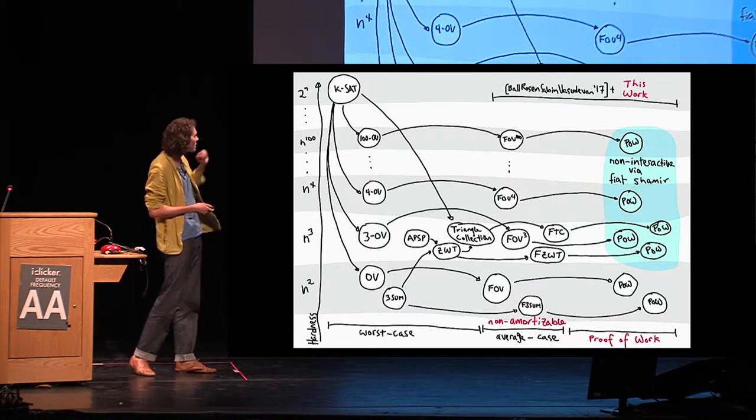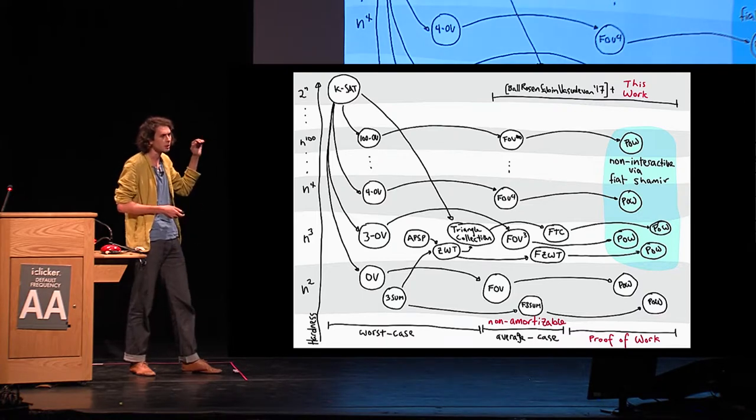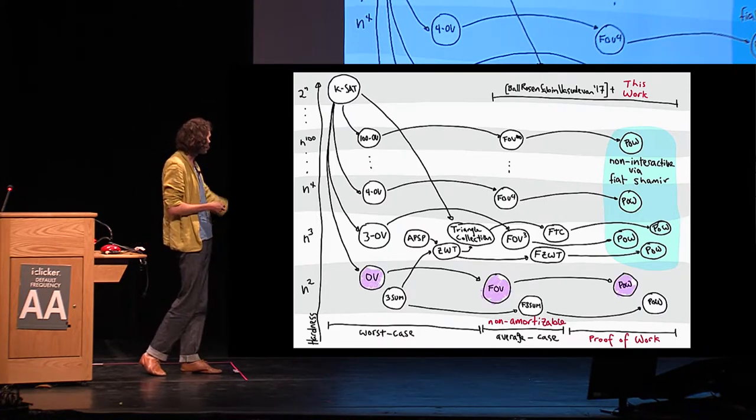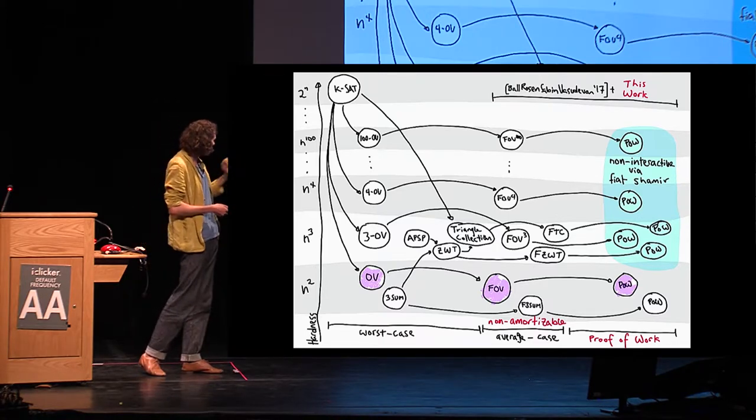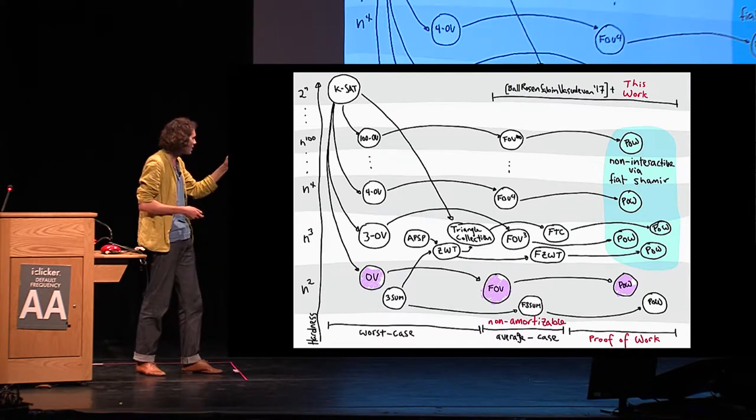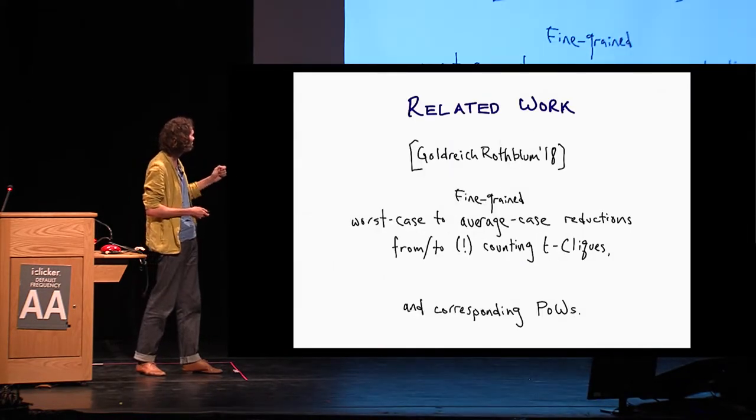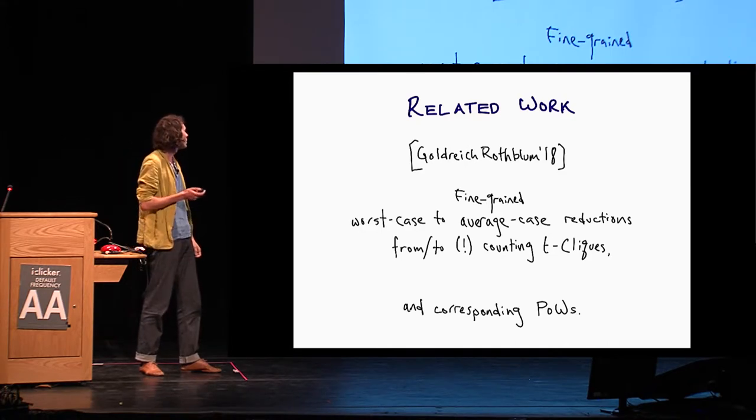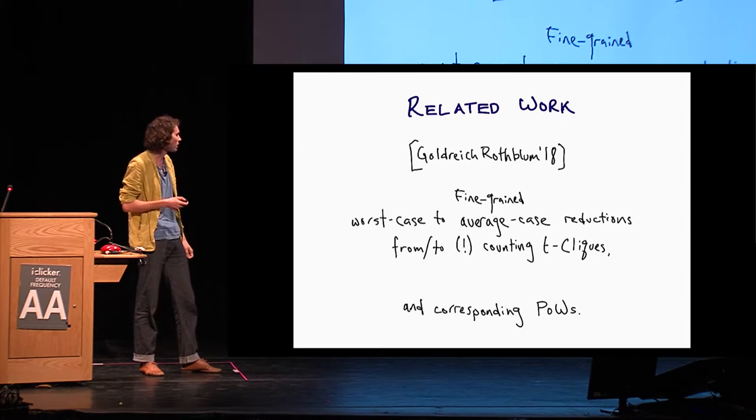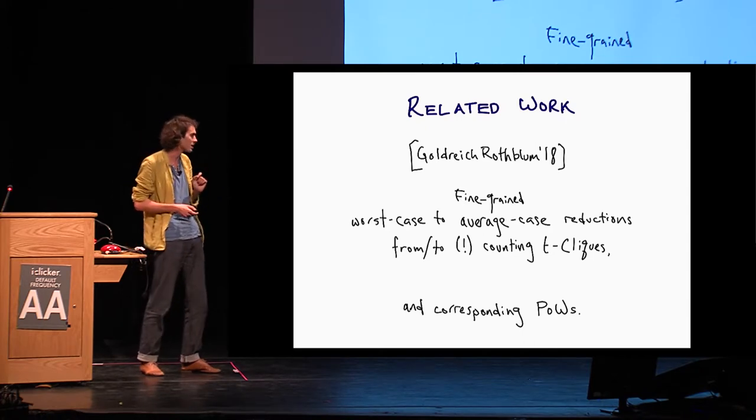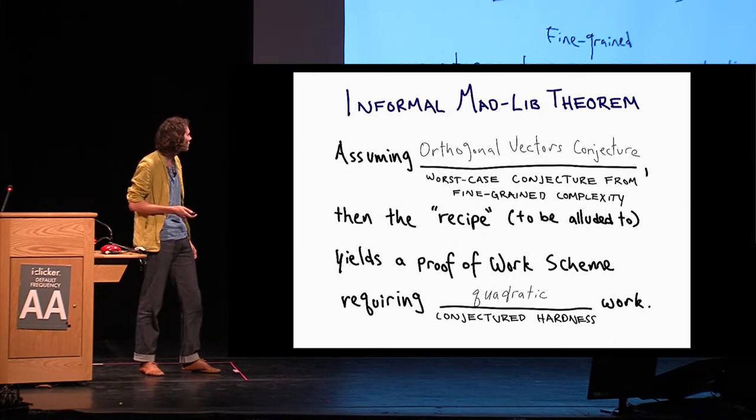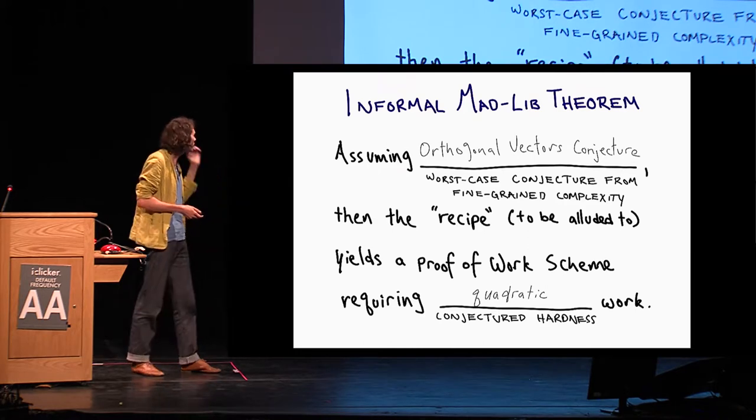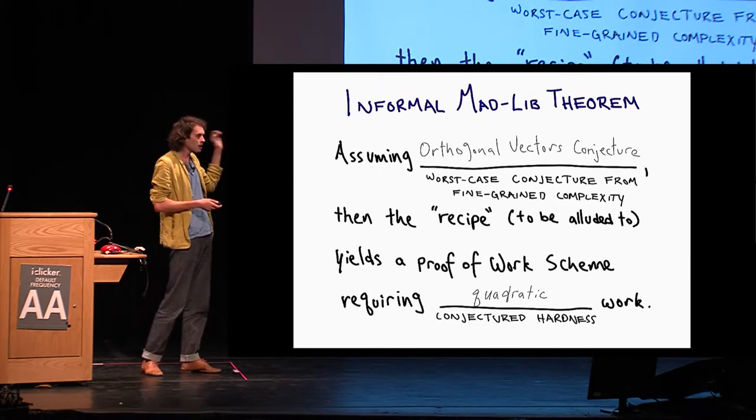And you can also, in this work, we prove that these algebraized problems in the middle are also non-amortizable, or we prove a direct sum theorem for them. And finally, we also prove that these hardness conjectures imply various proofs of work schemes on the far right. Let's keep going. So I should mention that anything above cubic, these proof-of-work schemes are not exactly what I described. They're interactive. And so if you want to compress them, the best way we know how is to apply Fiat-Shamir. Okay. So for the purpose of this talk, which there's not a ton of time left, we're going to focus on one specific instantiation of this Madlib, orthogonal vectors.